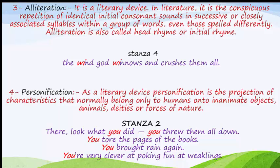The fourth literary device is personification. As a literary device, personification is the projection of characteristics that normally belong only to humans onto inanimate objects, animals, deities, or forces of nature. In stanza two, the word 'you' is used in every line — referring to the wind. Wind is inanimate, but it has been addressed as if it were a human being. That is personification.